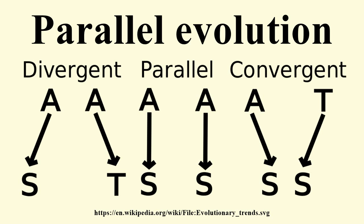From some points of view, the panda's sesamoid thumb might be regarded as convergent in function and appearance. Note that since serine and threonine possess similar structures with an alcohol side chain, the example marked divergent would be termed parallel if the amino acids were grouped by similarity instead of being considered individually. As another example, if genes in two species independently become restricted to the same region of the animals through regulation by a certain transcription factor, this may be described as a case of parallel evolution, but examination of the actual DNA sequence will probably show only divergent changes in individual base pair positions.